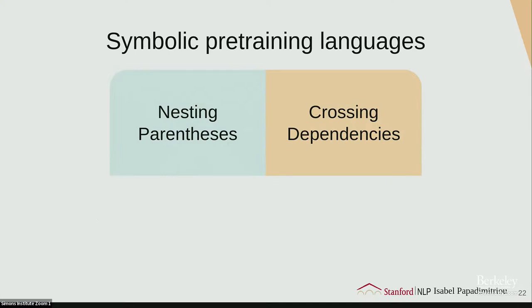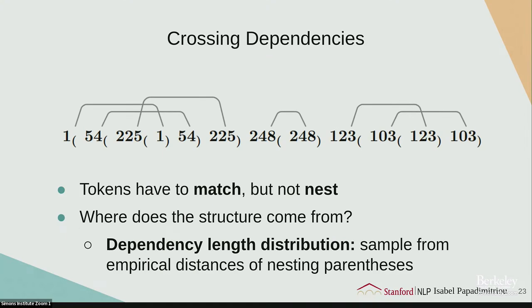The next pre-training language is crossing dependencies — a very similar vocabulary of open and close tokens, but without the well-nesting requirement. Tokens must match but don't need to nest. There is still some structure: we control the distribution between matching pairs by taking the empirical distribution of how far apart matching pairs tend to be in the nesting language, then sample from that. So they have the same dependency lengths, but no constituency structure — only the idea of expecting certain kinds of connections to appear.